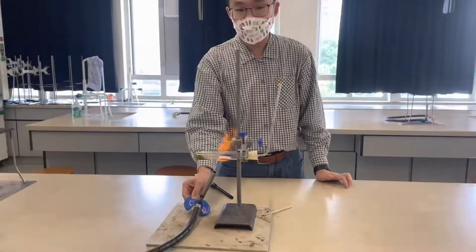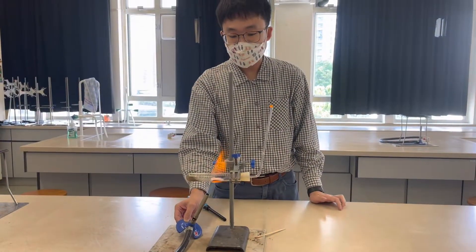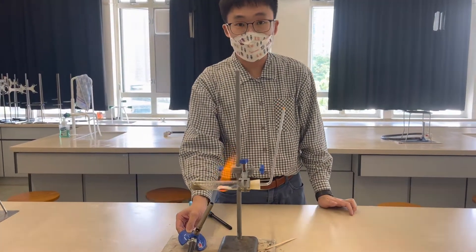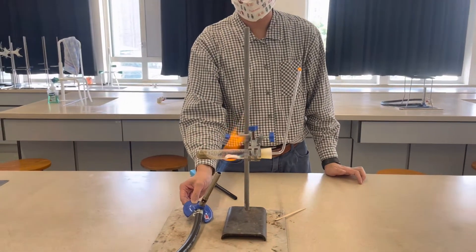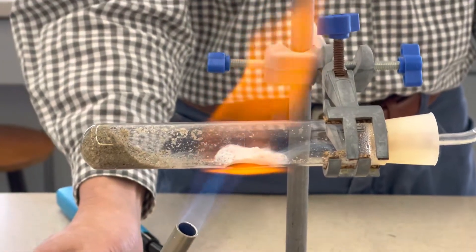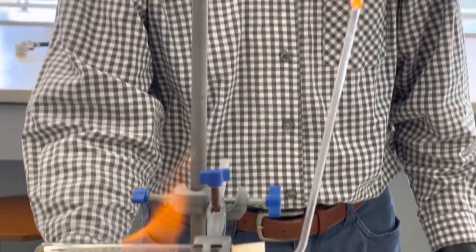And after glowing, the magnesium has turned into a very characteristic white color, which is the formation of magnesium oxide.